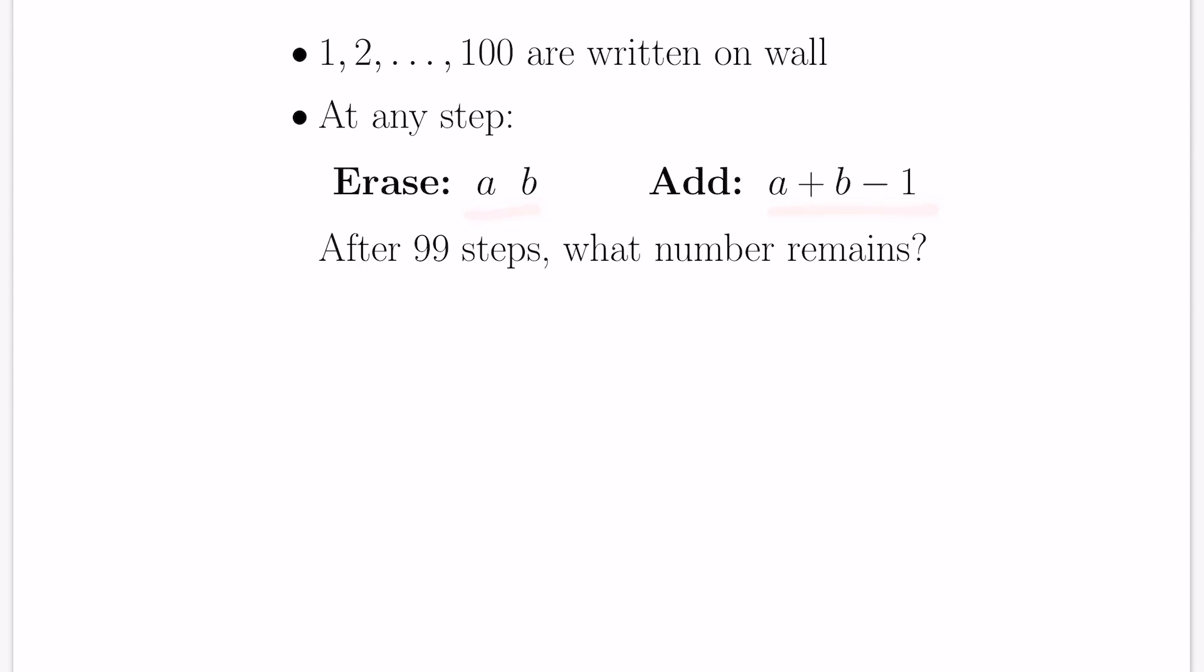At any step, we erase the two numbers A and B and replace by A plus B minus 1. What's the difference? This contributes A and B to the total list, and now we're replacing that by A plus B minus 1. There's a predictable change in the sum of the numbers that we have in our list. At any step, if we have S as the sum of the numbers in the list, then erasing A and B will be subtracting A and B from that sum. Then we add in the number A plus B minus 1. The total net effect is we subtract the sum by 1.